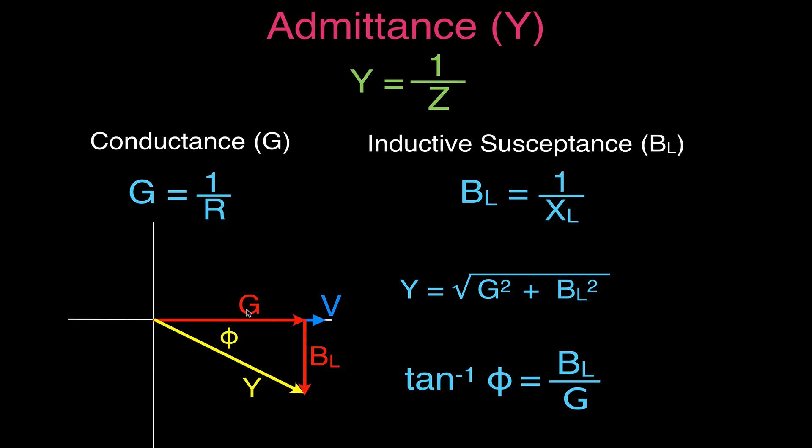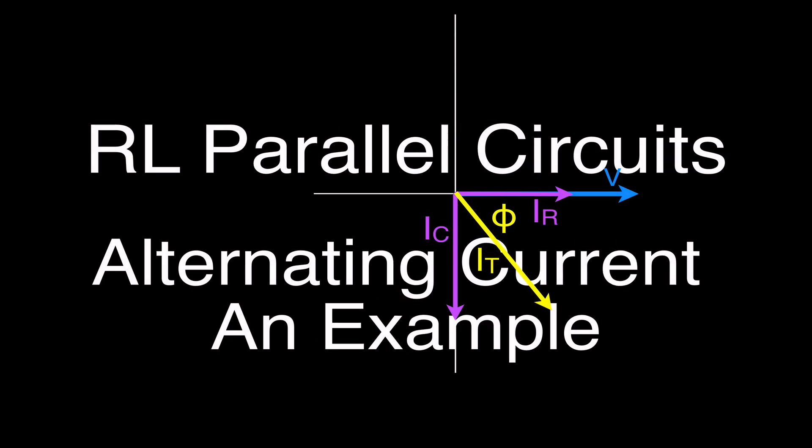That covers everything you need to know for basic parallel RL circuits: current, impedance, and admittance. Thank you for watching — I hope you found the video helpful. Please subscribe to Step-by-Step Science for all my physics, chemistry, and math videos, leave a comment, give a thumbs up, and share this video with your friends.